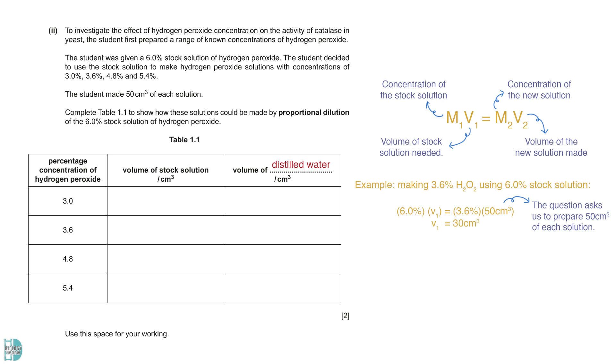This means that 30 cm³ of 6% solution is needed to prepare 50 cm³ of 3.6% solution. With that said, we must add 20 cm³ of distilled water to dilute it to a 3.6% solution. By using the same formula, you can calculate the rest of the values.